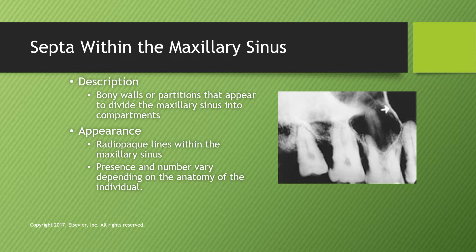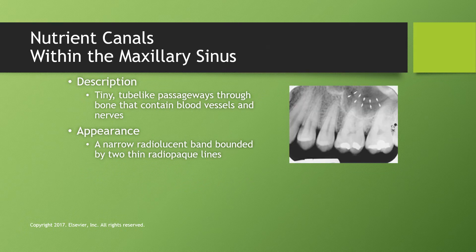Septa within the maxillary sinus are bony walls or partitions that appear to divide the sinus into compartments. They appear as radiopaque lines within the maxillary sinus, and their presence and number vary by individual. Septa is also the plural form of septum. Nutrient canals are tiny tube-like passageways through the maxillary sinus, supplying blood, tissue, and nerve to the teeth. They appear as a narrow radiolucent band bounded by two thin radiopaque lines representing the cortical bone walls.